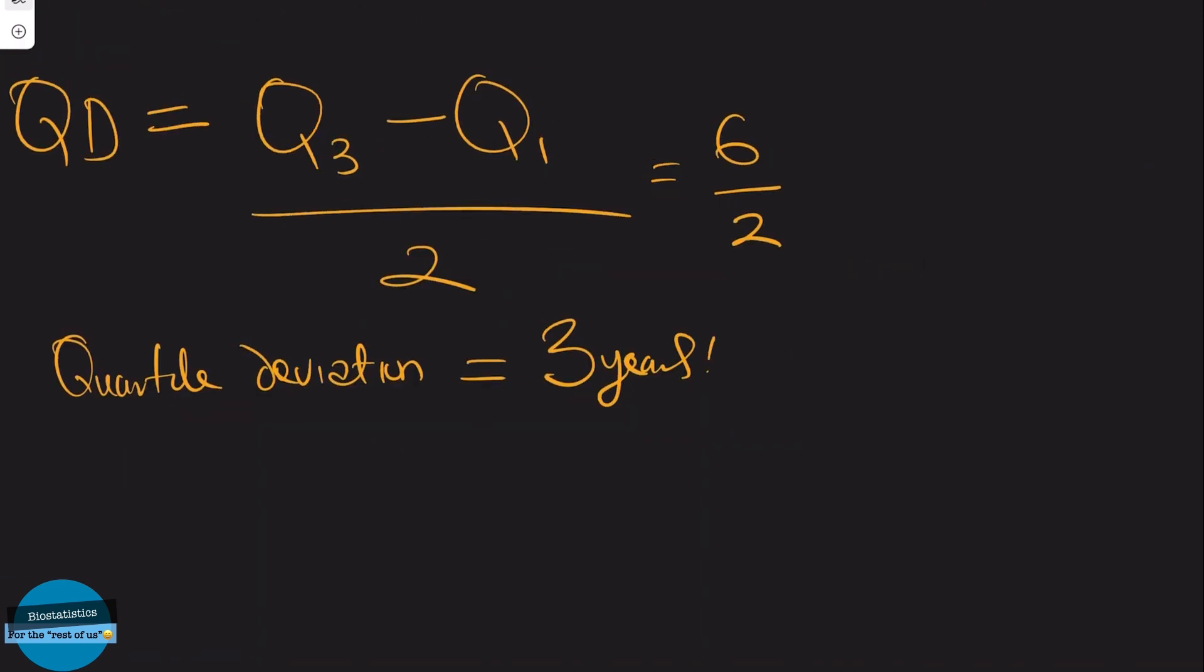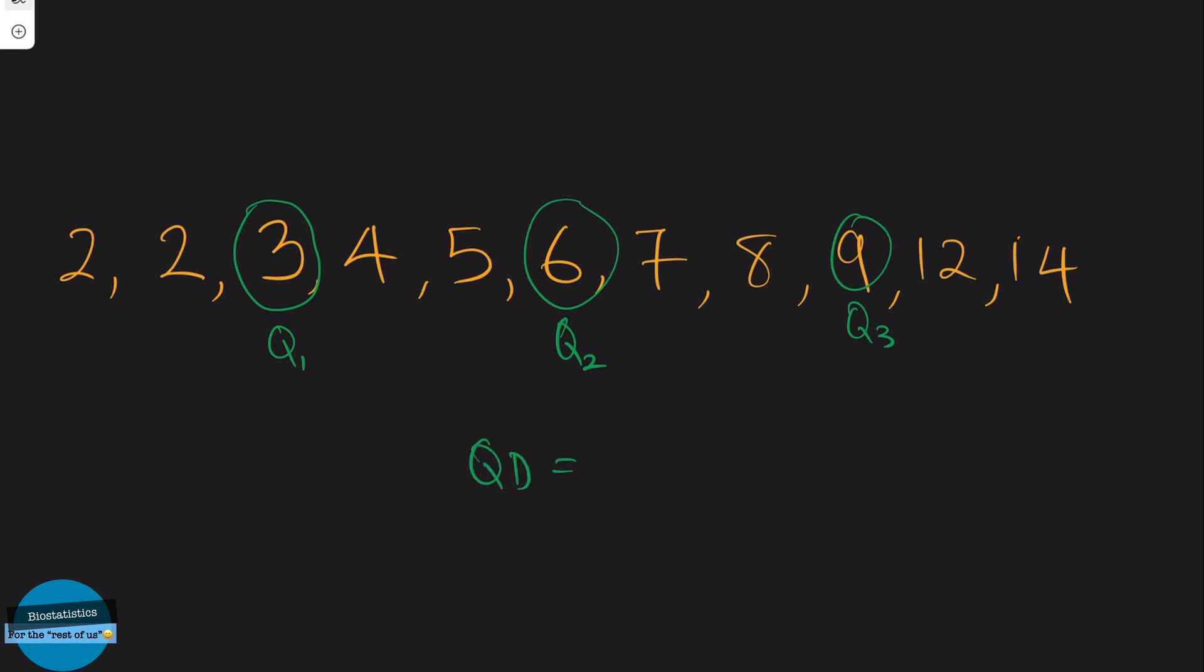So what does this mean? Well, it's easy. Let me explain. This means that the middle half of the data values from Q1 to Q3 is within 3 years of the median.